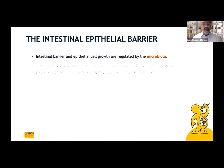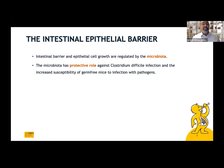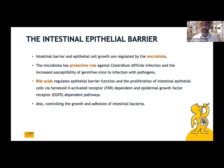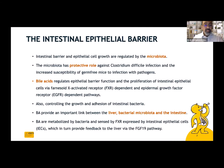The microbiota has a protective role against Clostridium cell infection, as evidenced by the increased susceptibility of germ-free mice to infection with pathogens. Bile acid is also important — it regulates epithelial barrier function and proliferation of intestinal epithelial cells through the farnesoid X-activated receptor (FXR)-dependent and epidermal growth factor receptor-dependent pathways. Bile acids provide an important link between the liver, bacterial microbiota, and the intestine. Bile acids are metabolized by bacteria, and FXR is expressed by intestinal epithelial cells, which in turn provide feedback to the liver through the FGF-19 pathway.